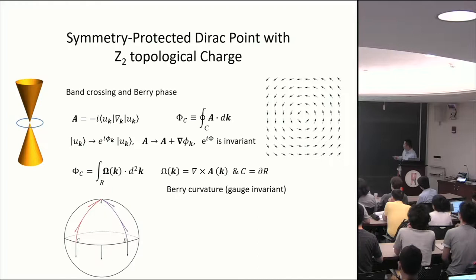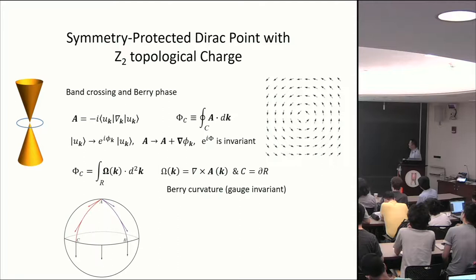What this example shows is that C3 rotation and reflection symmetry is sufficient for protecting the Dirac point, but not necessary. There is a deeper, topological origin to the Dirac points in graphene.